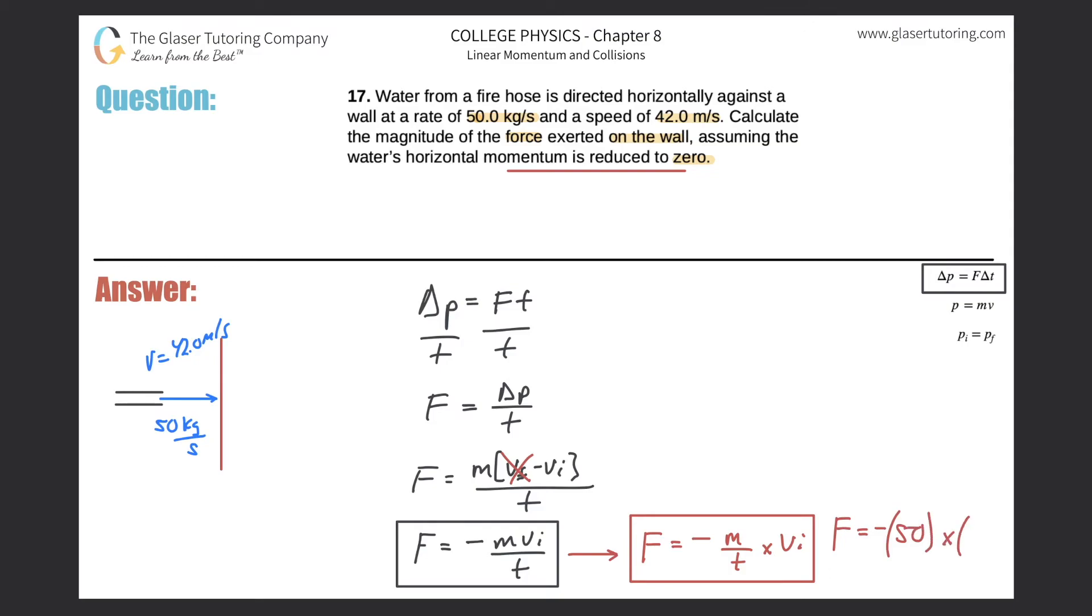Then times the initial velocity. And I assume that it's traveling to the right here. So it's positive. So this is 42.0. So just throw it into the calculator. So let's take negative 50 times 42. And we get a value of negative 2.1. So negative 2.1 times 10 to the 3 newtons.